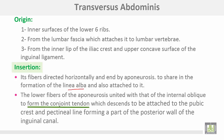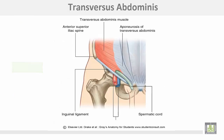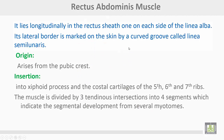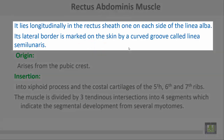The conjoined tendon descends to be attached to the pubic crest and pectineal line, forming part of the posterior wall of the inguinal canal. The transversus abdominis muscle ends medially by aponeurosis, and the lower fibers with the fibers of the internal oblique share in the formation of the conjoined tendon.